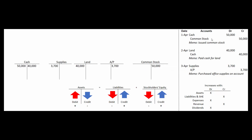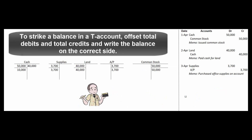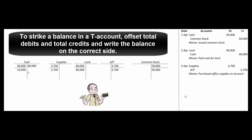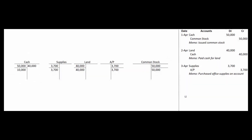Now let's strike balances in these accounts. To calculate balances, we offset all debits against all credits. In cash, we had $50,000 in debits and $40,000 in credits, giving a balance of $10,000. We draw a line to show we struck a balance, and since it's a debit balance, we write it on the left-hand side. The other accounts have single entries, so no offsetting is needed. Now when my boss asks how much cash we have, I can say we have $10,000 in the bank.